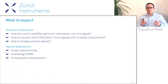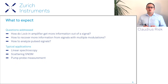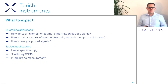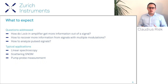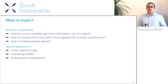What to expect in the next 25 minutes? We will address a few questions: how do lock-in amplifiers get more information out of a signal compared to simply digitizing it; how to recover more information from a signal with multiple modulations; and how to analyze a pulsed signal from your experiment. We will look at typical applications including linear spectroscopy, scattering SNOM — where modulated light impinges on an AFM tip confining the light field into a very small space-time volume on the sample — and pump-probe measurements.